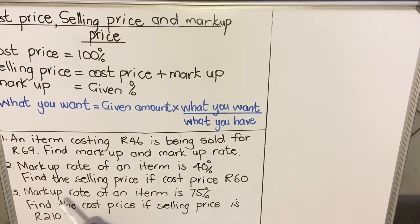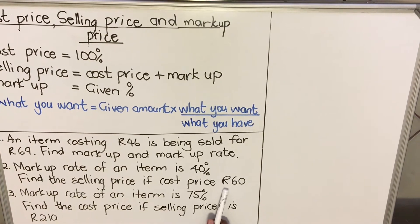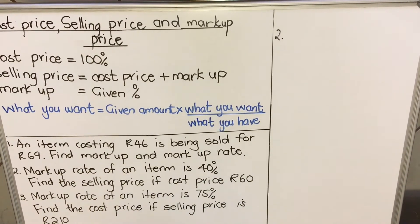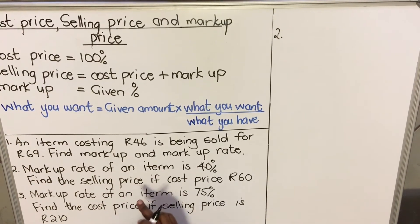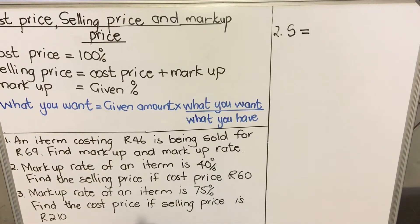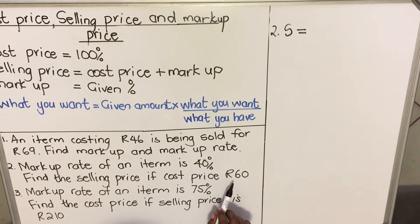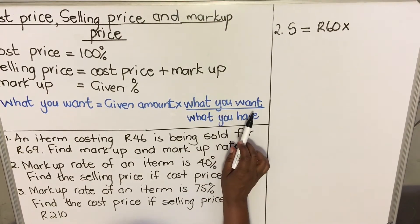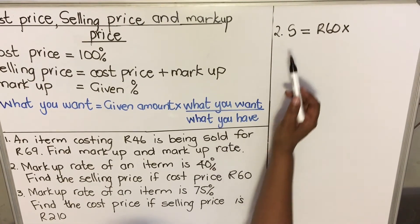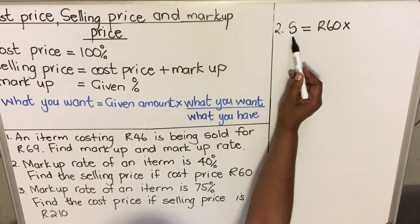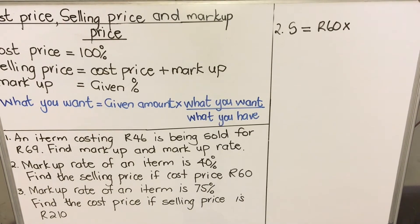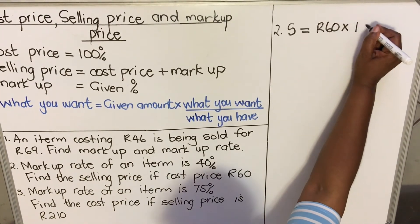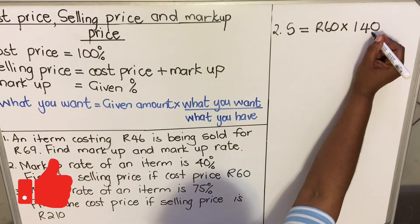Let's look at the second example. The markup rate of an item is 40 percent — find the selling price if the cost price is 60 rands. We're going to use the formula: what you want equals the given amount multiplied by what you want in percentage divided by what you have in percentage. What we want is the selling price. The amount given is 60 rands. The selling price in percentage is the cost price plus the markup price, so it's 100 percent plus 40 percent, which equals 140 percent.